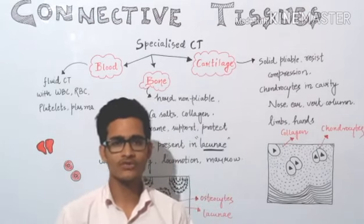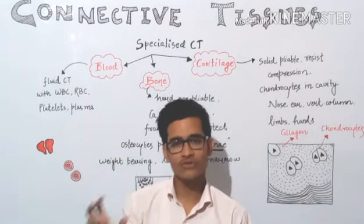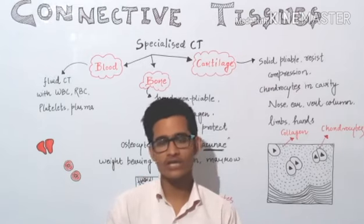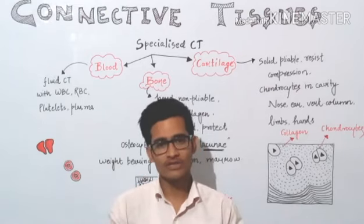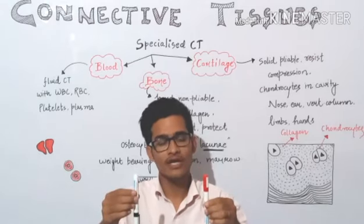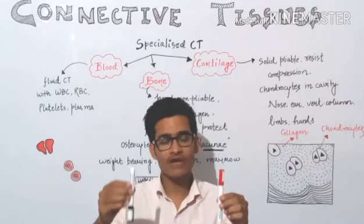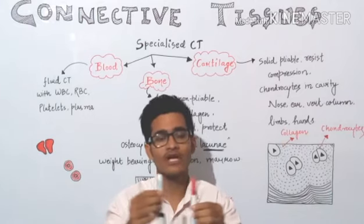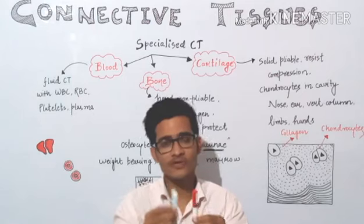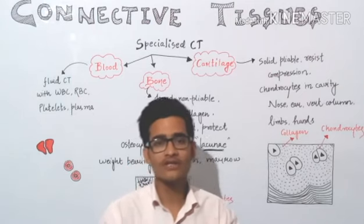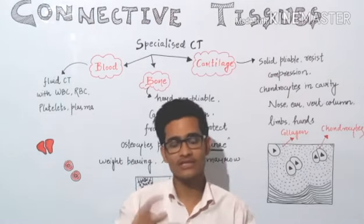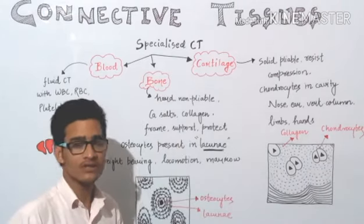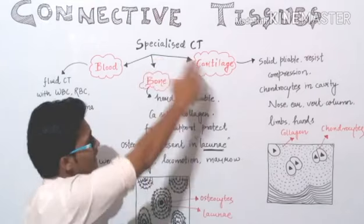In loose connective tissue, the fiber bundles and collagen fibers are loosely arranged or loosely packed. In dense connective tissue, the fibers are present very closely together, so there is good interaction between different kinds of fibers, giving them more strength or density. That is the name of dense connective tissue. Now the third category is specialized connective tissue.